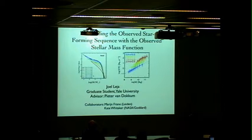I'm going to talk about how to reconcile the evolution of the stellar mass function with the observed star forming sequence. Specifically, what can we learn about the star forming sequence from looking at the evolution of the mass function.